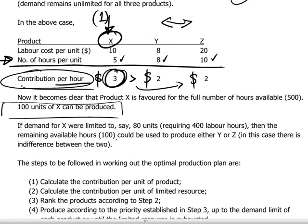Of course, if there was also a limit on demand for X, then we would produce X up to the maximum demand limit — let's say 80 units — which requires 5 times 80, or 400 labor hours. The remaining 100 hours could then be used for producing other products according to the ranking.